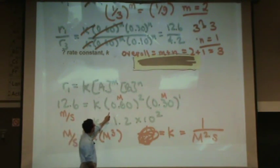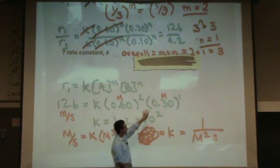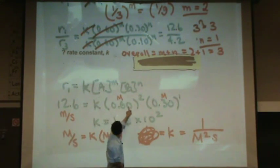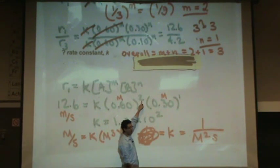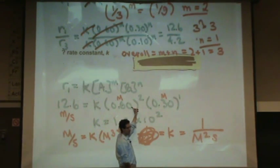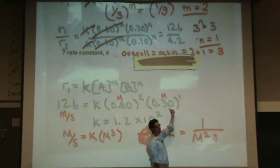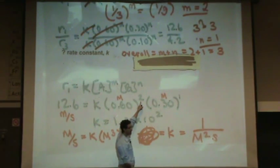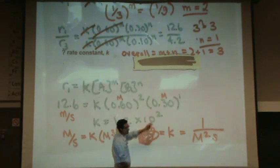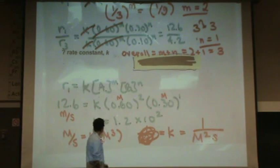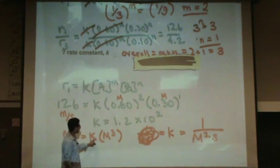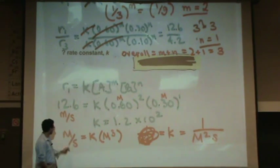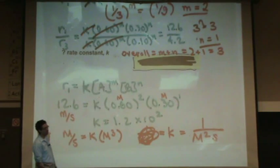A student asked why molarity ends up in the denominator for k. The reason is: [A] is in molarity and is squared because it's second order with respect to A; [B] is to the first power because it's first order with respect to B. That gives M times M squared, or M cubed on the right-hand side. K is unknown, and M per second comes from the table above.